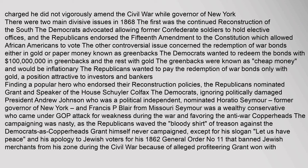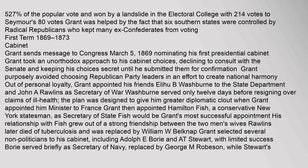Democrat Horatio Seymour was easily defeated by Grant in the election of 1868. There were two main divisive issues: the continued reconstruction of the South, and the redemption of war bonds either in gold or paper money known as greenbacks. The Democrats wanted to redeem bonds with greenbacks — cheap, inflationary money — while the Republicans wanted to pay only with gold. Finding a popular hero who endorsed their reconstruction policies, the Republicans nominated Grant and Speaker of the House Schuyler Colfax.